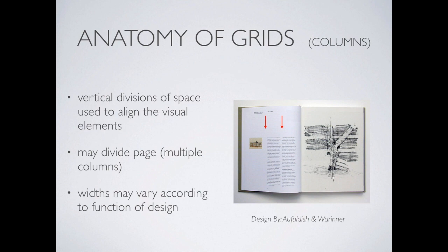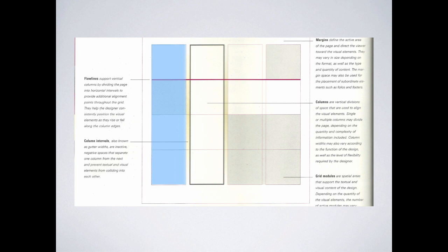Then we move into columns. If you've read a newspaper or a magazine, you're familiar with what a column is. It's essentially a vertical division of space used to align the visual and text elements on a page. They might divide the page into multiple columns — three or four depending on the content — and the widths vary according to the function of the design. A history paper is typically one column with a comfortable line length, while a magazine might have four smaller columns that you read through quickly. In this example page, there are four actual columns.